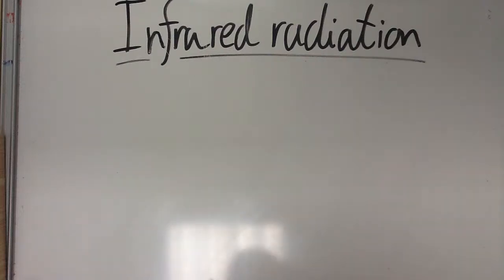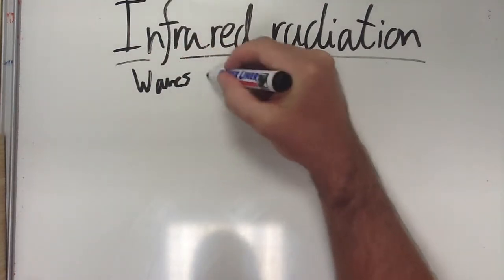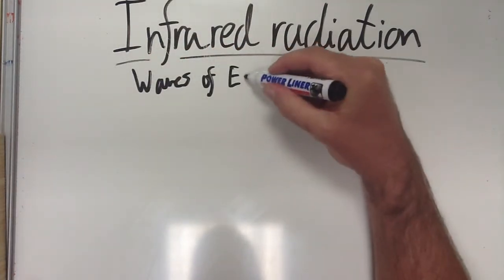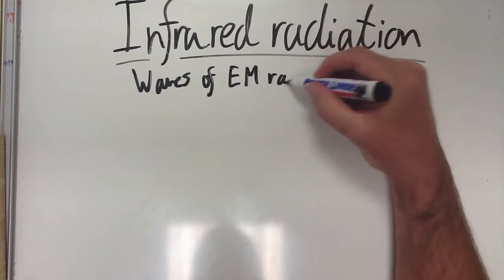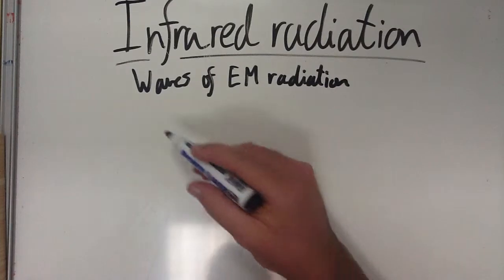Infrared radiation is an energy transfer through waves of electromagnetic radiation. It is a form of light that is actually mentioned on the EM spectrum.